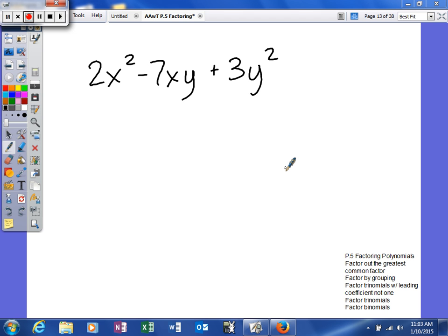But before I do any other type of formal factoring, I'm going to try to factor out our common factor. Here, this term and this term have an x, but this does not. Those two have a y, but that one does not. And there is no common factor between 2, 7, and 3, so I can't really do anything there.